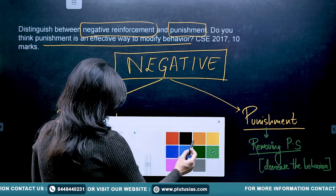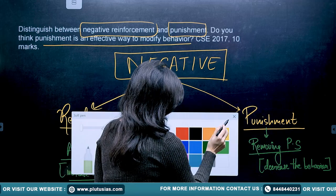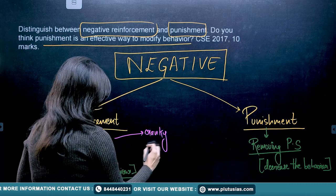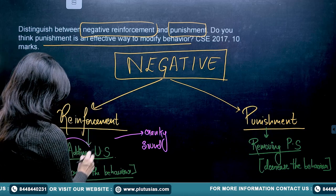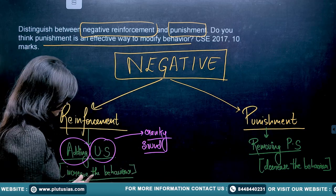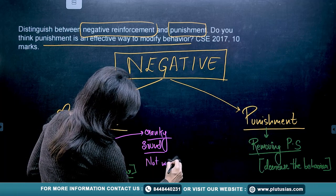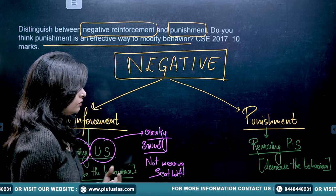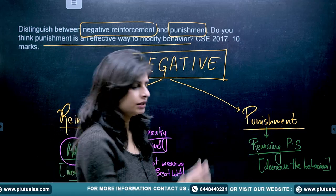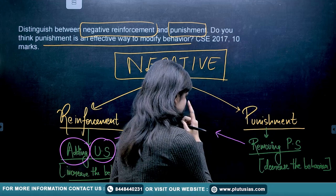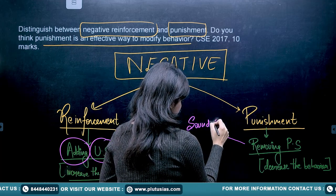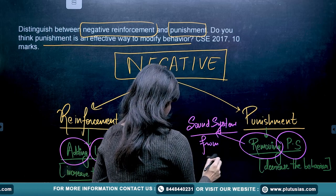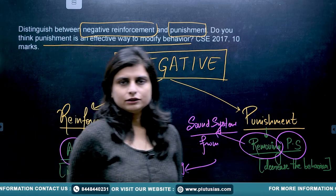For example, with negative reinforcement: if there is a cranky sound when a person doesn't wear the seat belt, the cranky sound is the unpleasant stimulus being added. For negative punishment: if a person who loves music has their sound system removed from the car when they don't wear the seat belt, you are removing the pleasant stimulus. First, explain the difference between negative reinforcement and negative punishment.